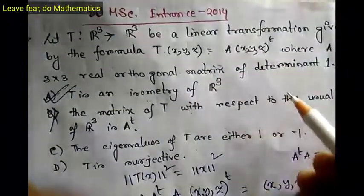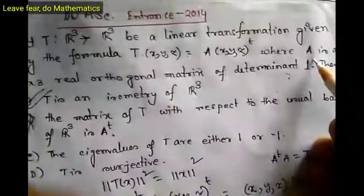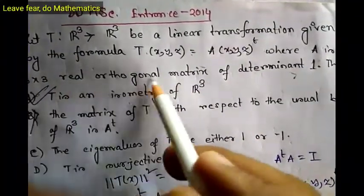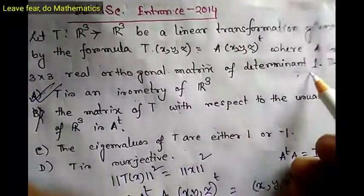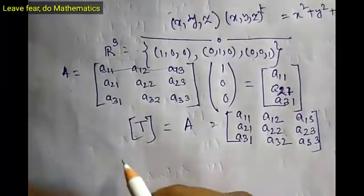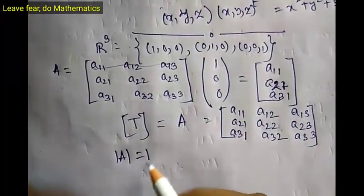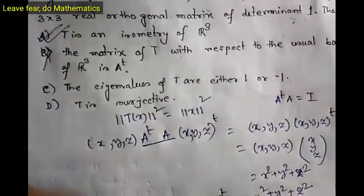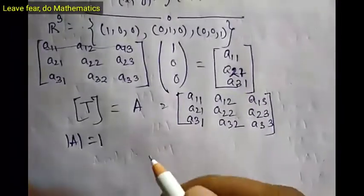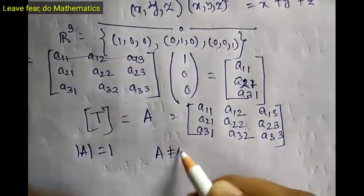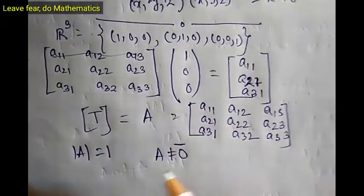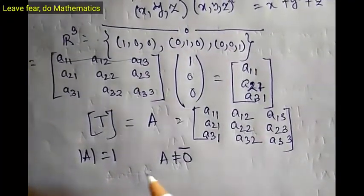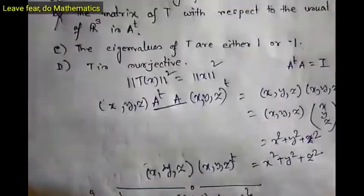A is a 3×3 real orthogonal matrix of determinant 1, and A is the matrix representation of T with det(A) = 1. Since det(A) = 1, A is non-singular, therefore A is invertible and has full rank. A having full rank means T is surjective. So option D is true.